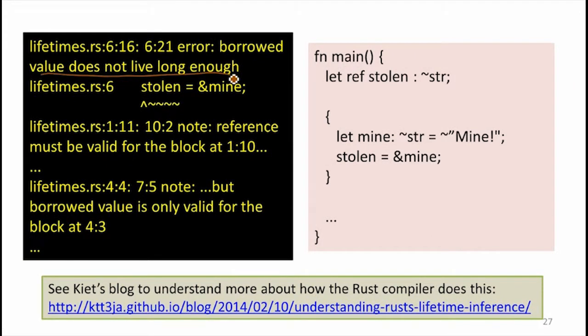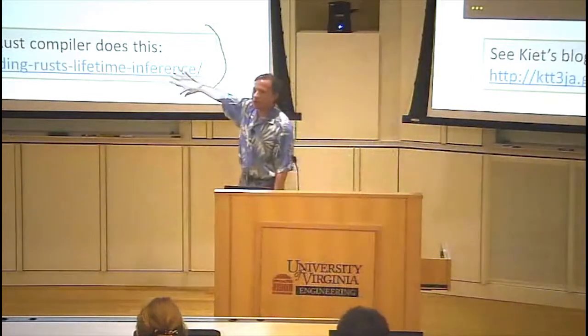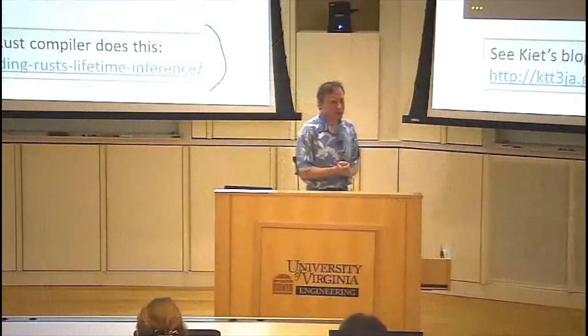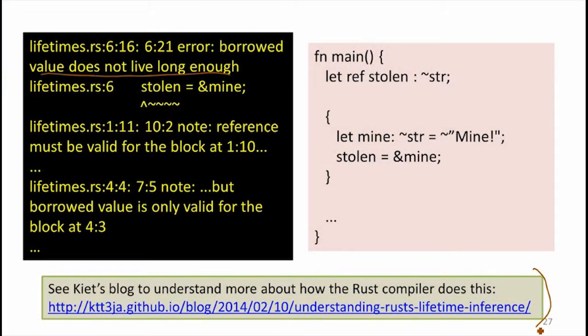So it's also, I think, fairly understandable how it's worded. Kiet, who took this course last semester, is working on a project to improve these compiler warnings, because some of them are actually really incomprehensible. We'll see a more incomprehensible example later. He's written up some posts to explain how the Rust compiler actually figures out when lifetimes are violated, which in this example seems fairly straightforward. It can get quite complicated. But in this case, the lifetime of the mine object is within this scope, but the lifetime of the stolen is outside it. So we have a problem.